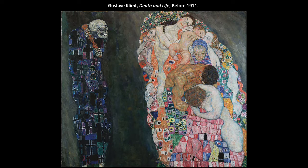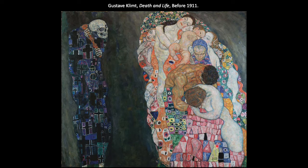In Gustav Klimt's Death and Life, pattern is the systematic and repetitive use of the same motif or design. On the right side we have various patterns, though they're all unified in color, shape, and size — brightly colored and evocative of growth and life. Whereas on the left, we have a more repeated motif of a cross creating the pattern, using darker, more somber tones and values.